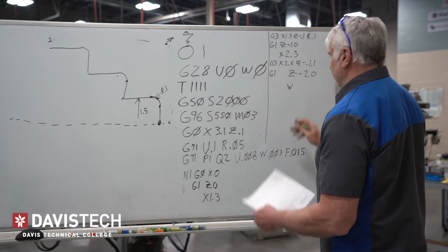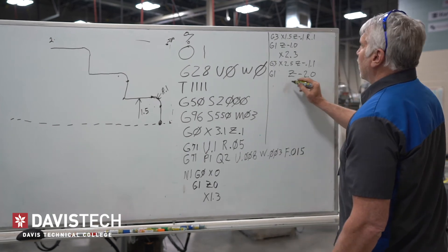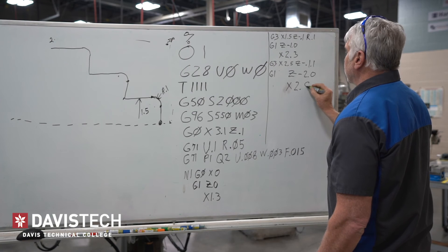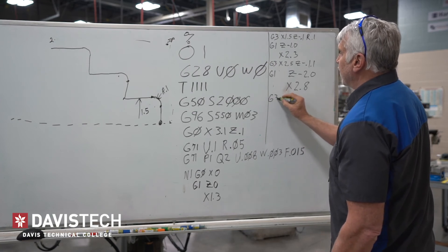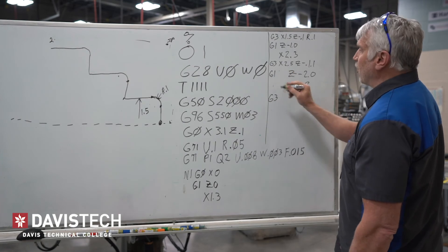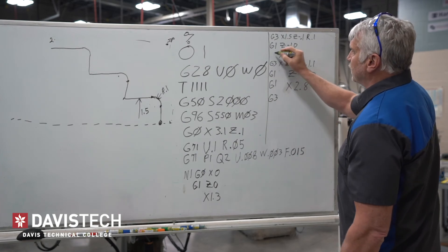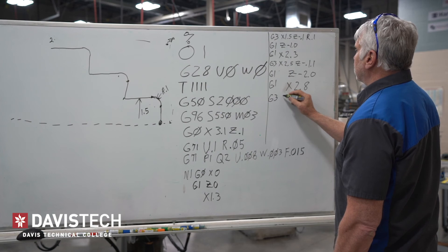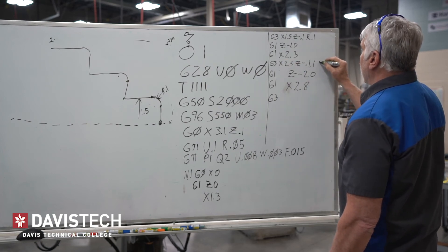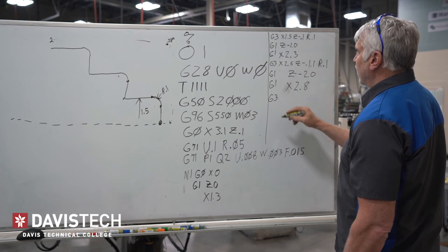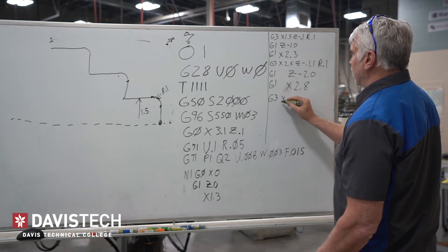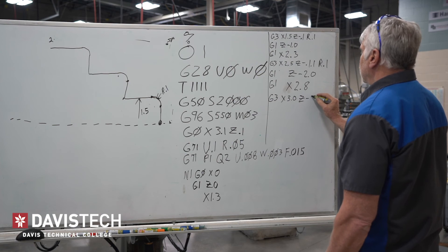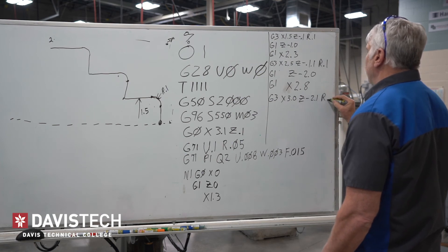I'm going to go to X of 2.8. Then I'm going to do a G03 again — and I should note, you don't have to put a G01 on a modal line but you can, just to remind you that we're in a linear movement. Then going to a G03: my X — I forgot to put an R of 0.1 on the previous G03 — and now I'm going to go to X of 3.0 and a Z of negative 2.1 with a radius of 0.1.